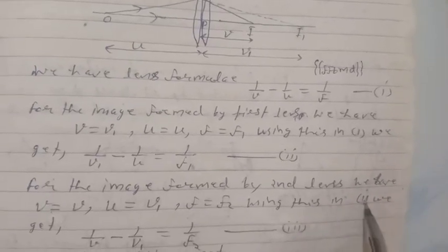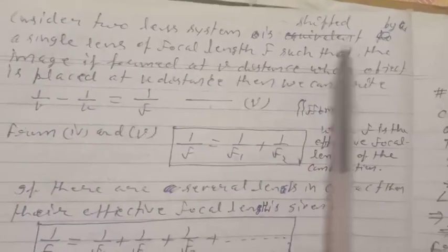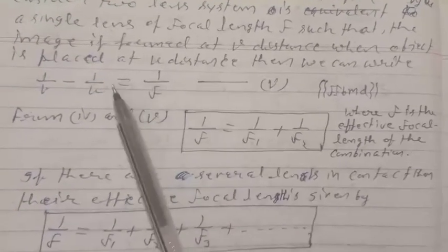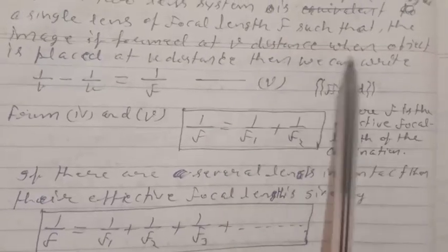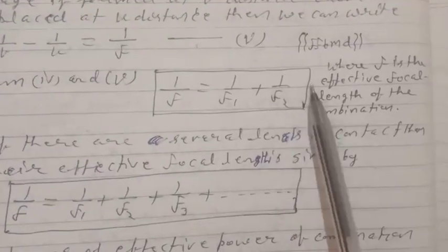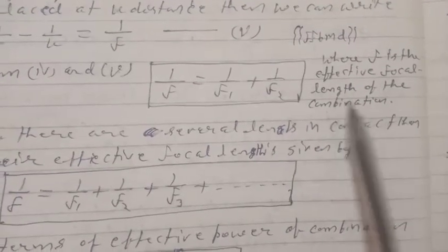Adding equations 2 and 3, we get 1/V minus 1/U equals 1/F1 plus 1/F2. Consider the two-lens system replaced by a single lens of effective focal length F such that the image is formed at distance V when the object is placed at distance U, then we can write 1/V minus 1/U equals 1/F.